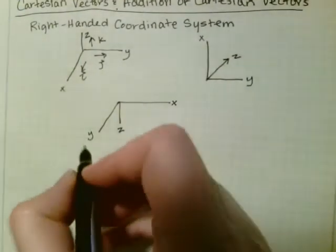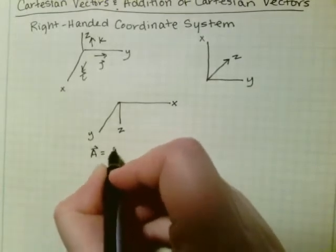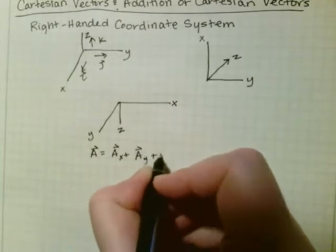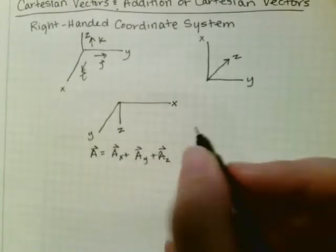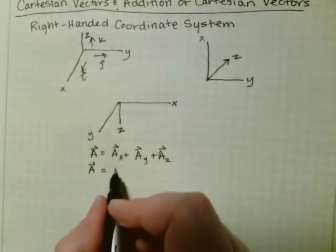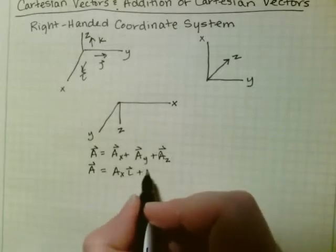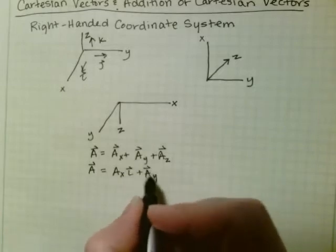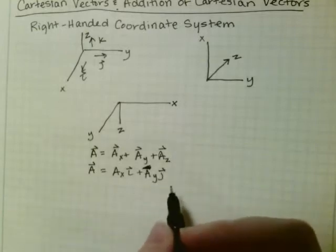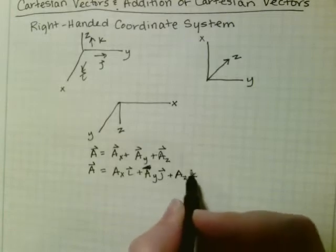So a vector in three dimensions can be written as ax plus ay plus az. Or with each of these as a scalar, it's ax and the unit vector i, plus ay the scalar times the unit vector j, plus az times the unit vector k.